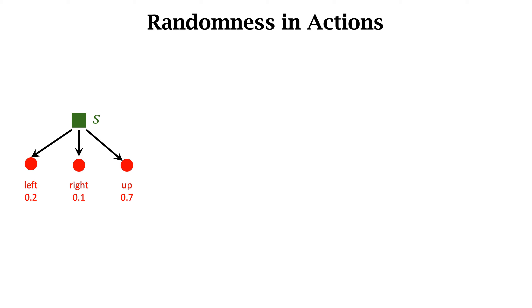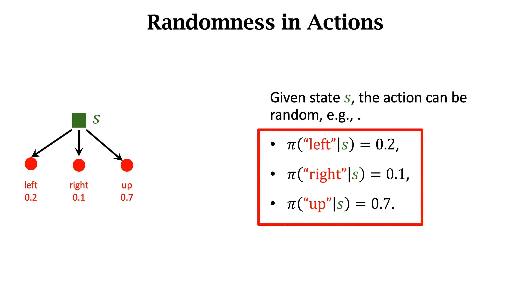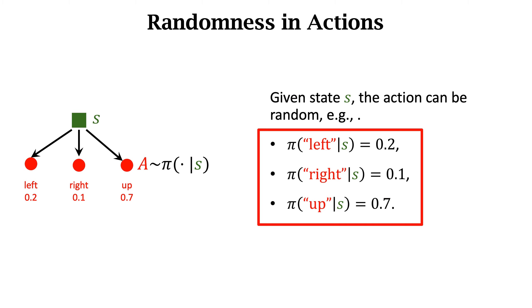Let's study the randomness in actions. Given state S, action A is randomly selected. For example, the policy function outputs the probabilities of the three actions. The three probabilities are 0.2, 0.1, and 0.7. The action is randomly sampled from the discrete probability distribution. Left is selected with probability 0.2, right with probability 0.1, and up with probability 0.7. Any of the three actions can be selected, but up has the highest probability.